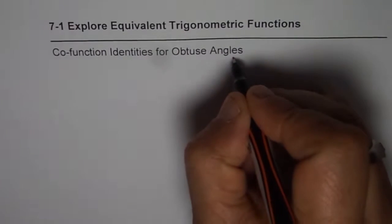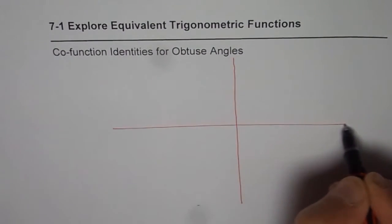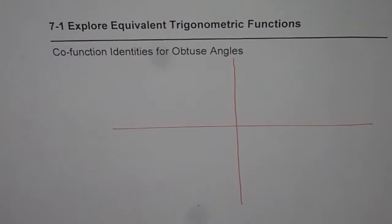So I'll divide this page into four quadrants and then look into them one by one. In this particular video, I'm taking only obtuse angles. We have another video on acute angle co-function identities.